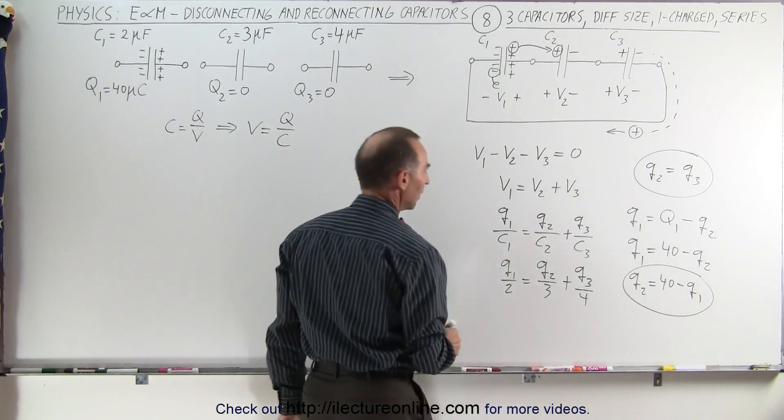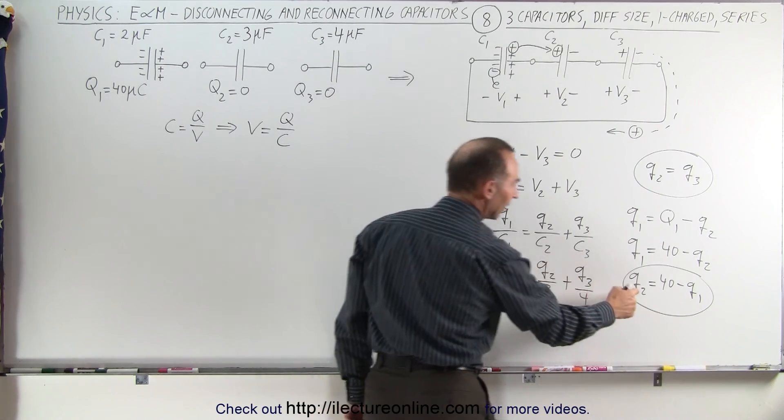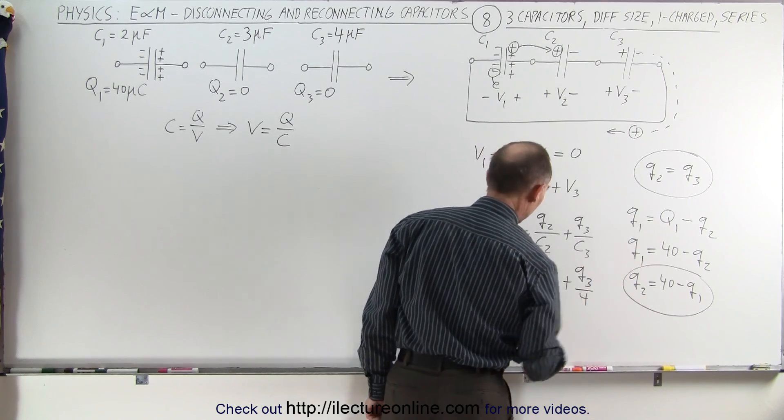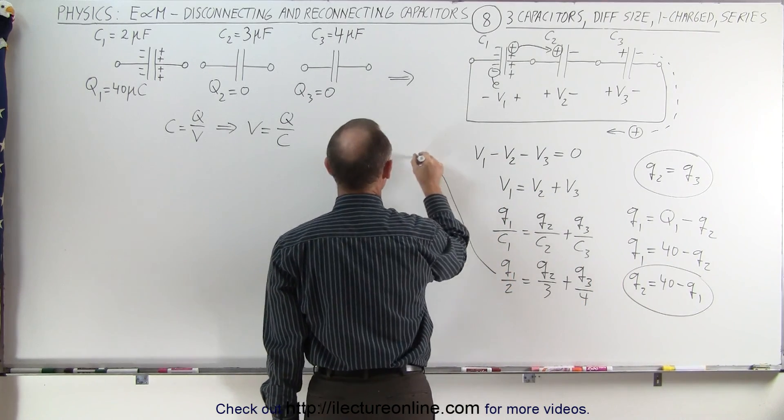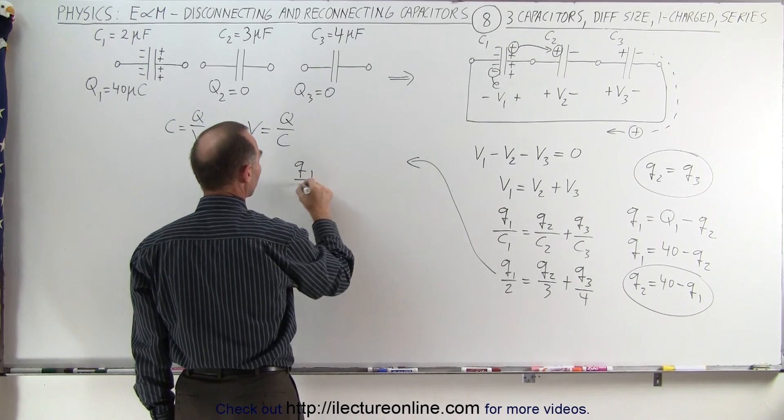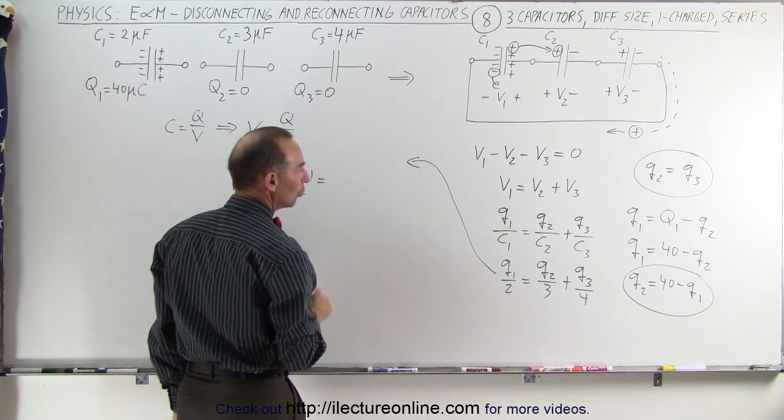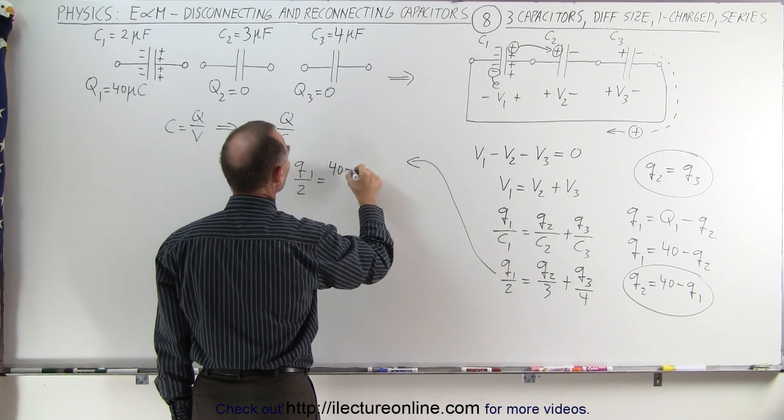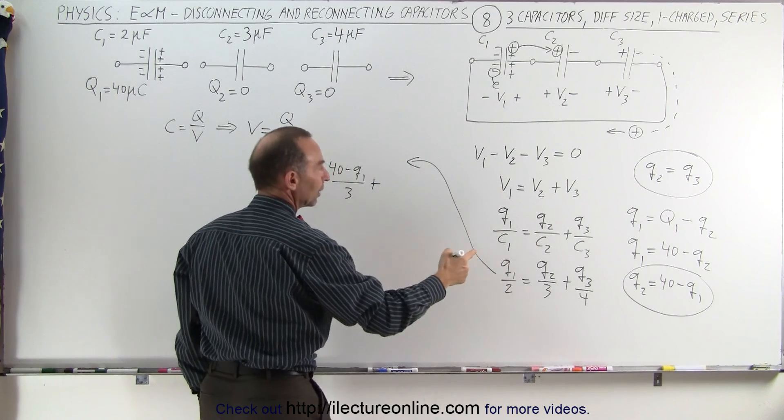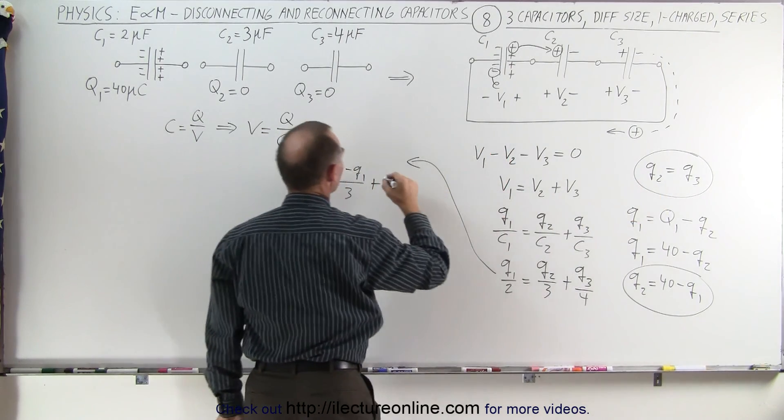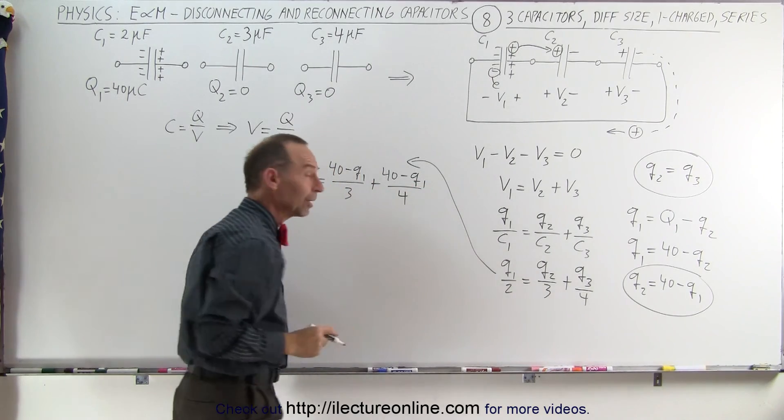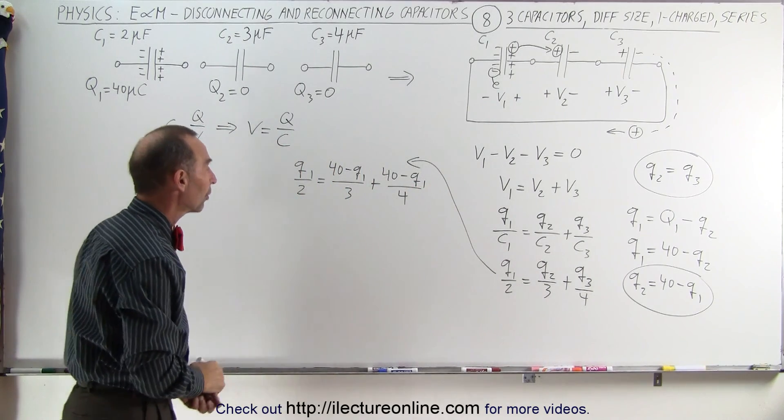So then we come over here, we can now replace Q2 by this, and since Q3 is equal to Q2, we can replace Q3 by this as well, which means when we move over here, we have Q1 over 2, which is equal to Q2, which is 40 minus Q1 over 3, plus Q3, which is equal to Q2, therefore also equal to 40 minus Q1 over 4.